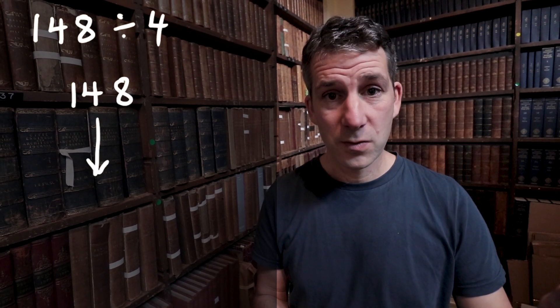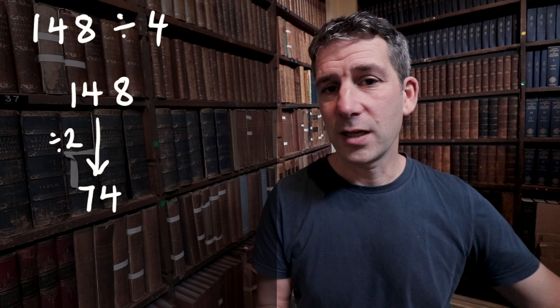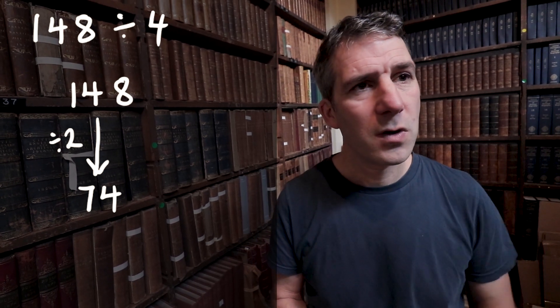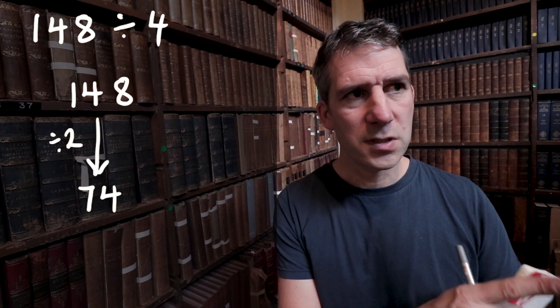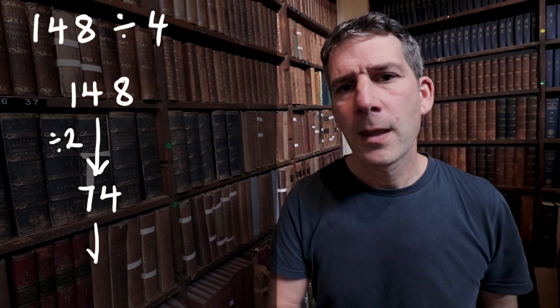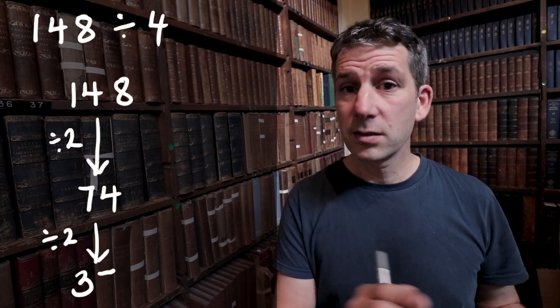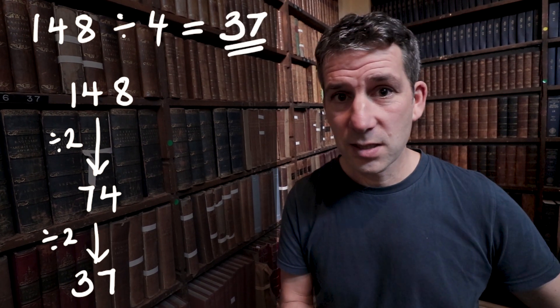I'm going to halve it, which is 74. And then I'm going to halve it again. So half of 74. Well, if I do half of 70, that's 35. Half of 4 is 2, so it's 37. So 148 divided by 4 is 37.